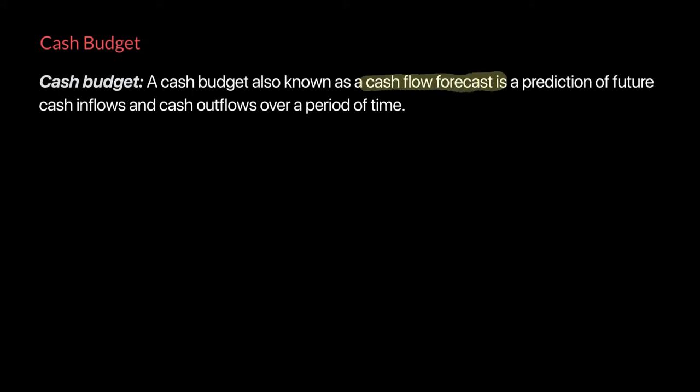A cash budget is essentially a cash flow forecast prepared by the firm, which gives us a prediction of future cash inflows and cash outflows over a period of time. This financial plan is important because it helps you assess the liquidity position, any cash flow shortages, and cash flow surpluses that the firm would have, and the firm can make financial decisions accordingly.